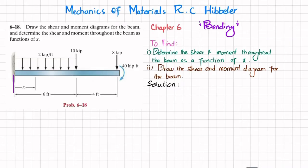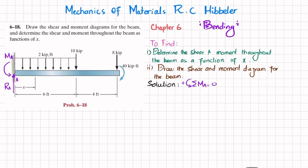Starting with the solution: if you remove the fixed support at point A, you will have a reaction force Ra and a reaction moment Ma. We'll find Ma and Ra using equations of equilibrium. The first equation is that the sum of all moments about point A equals zero, taking counterclockwise as positive. The uniformly distributed load of 2 kips per foot over 6 feet converts to a point load of 12 kips acting at 3 feet from A.